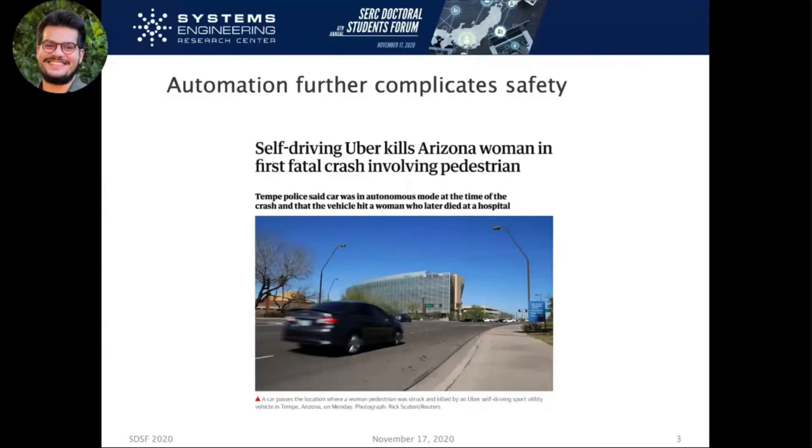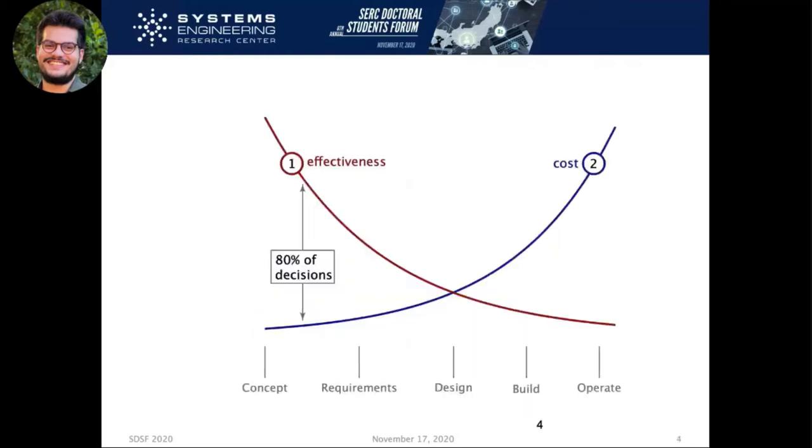You can see here that the indecision of a vehicle, namely not to stop, actually led to loss of life. I was thinking about modeling and why we want to model things and what models mean. We really do need models to assure the safety and security of systems, because most of our decisions are highest in effectiveness and lowest in cost before we even start drafting requirements.